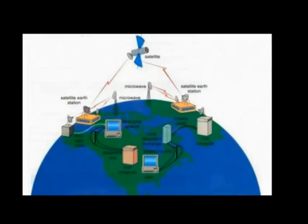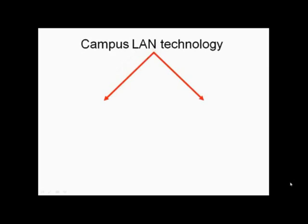This method can provide internet or network access to remote areas without telephone lines or communication infrastructure. Campus LAN technology refers to LAN technology used to provide internet access to students and faculty on campus grounds. Broadly, there are two types: wired and wireless.